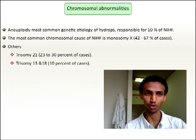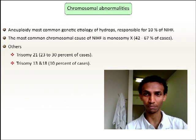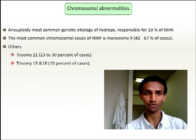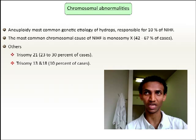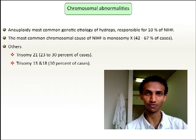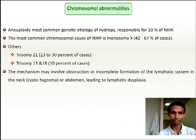Chromosomal anomalies account for 10% of non-immune hydrops fetalis. The most common cause is monosomy X (Turner syndrome), followed by Edwards syndrome and Patau syndrome, which account for 10% each. The mechanism may involve obstruction or incomplete formation of the lymphatic system in the neck, as seen in cystic hygroma in Turner syndrome.